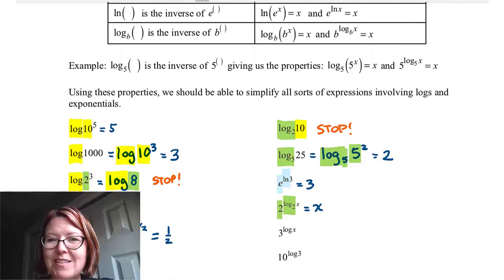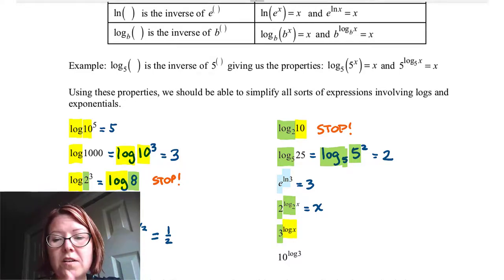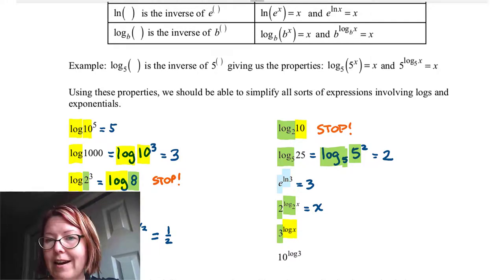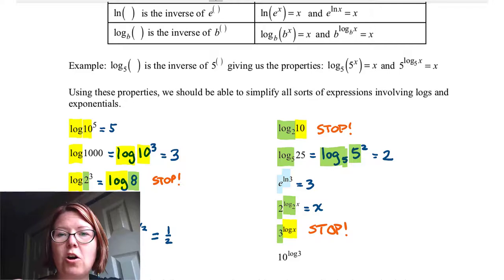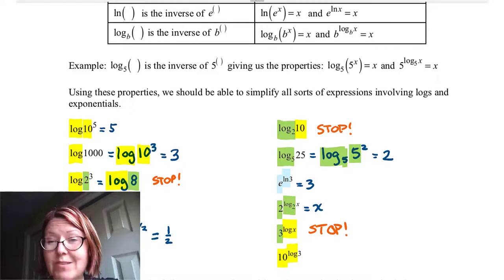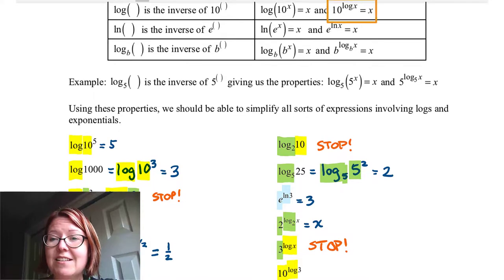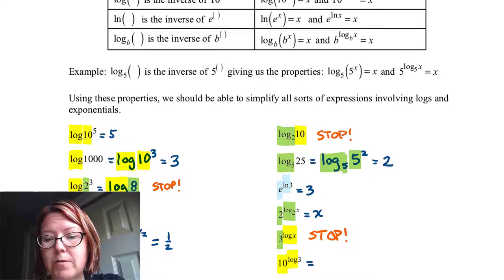The next expression is 3 to the log x. The base of the exponential part is 3 and the base of log x is 10 — those are not matching bases, and there's no way to rewrite 3 or x to make them match. So we stop. The final expression is 10 to the log 3. The base on the exponential is 10 and the base on the log is also 10, so we apply 10 to the log x equals x. In this case 10 to the log 3 equals 3.